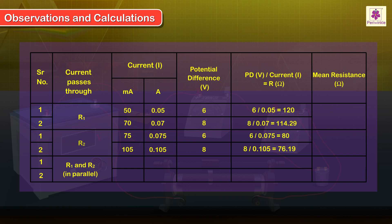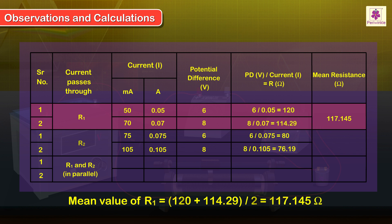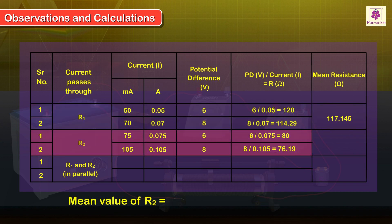Now calculate the mean values of R1 and R2. Mean value of R1 is equal to (120 + 114.29) divided by 2, which is equal to 117.145 ohms. Mean value of R2 is equal to (80 + 76.19) divided by 2, which is equal to 78.09 ohms.